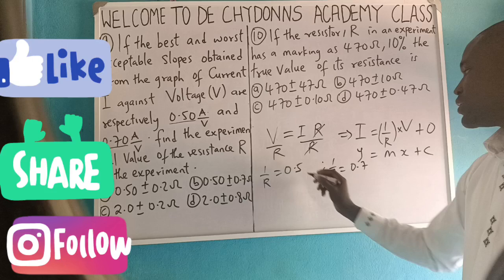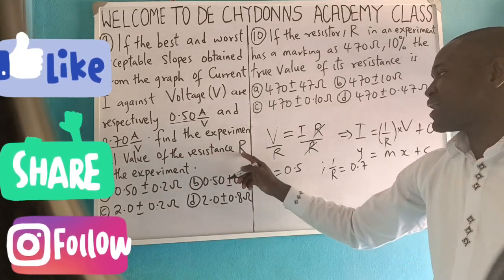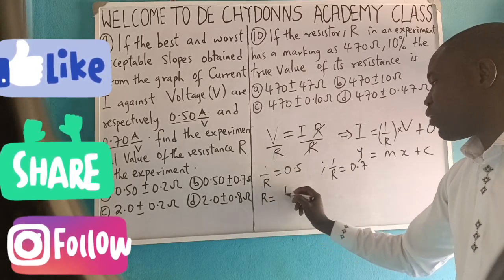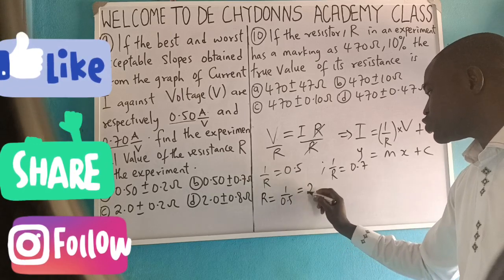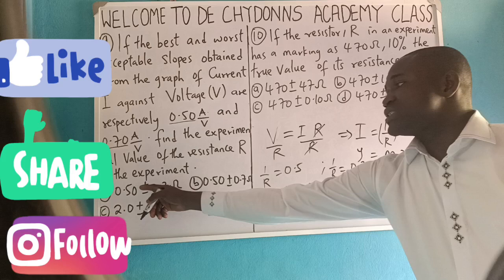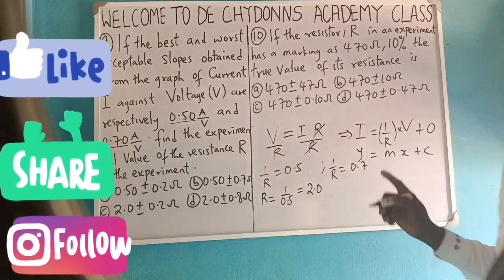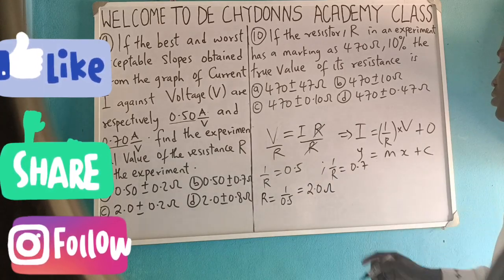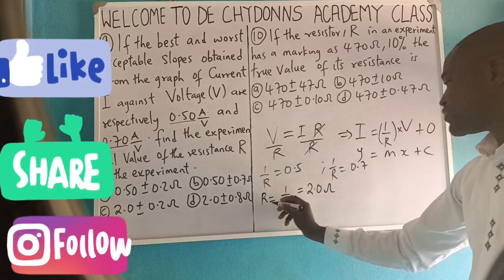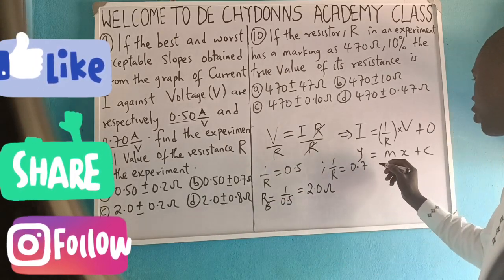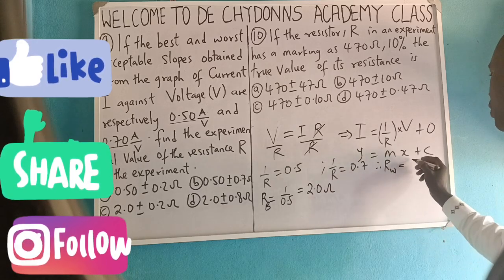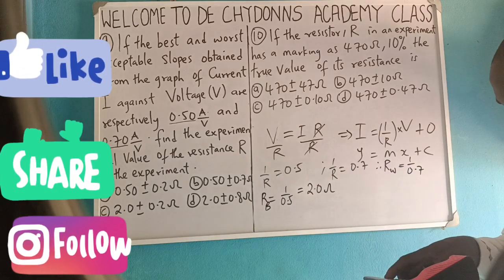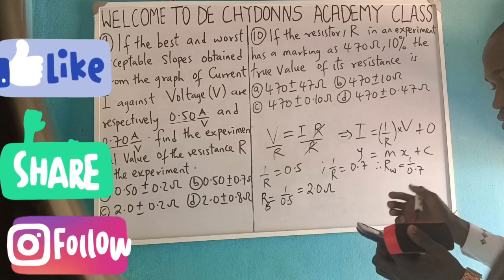Now, to get the experimental resistance of the resistor in the experiment, you will make R inverted: 1 over 0.5, that will give you 2.0. That means I have deleted two options. I am now working for the remaining two options. 2.0 ohms. Then for the worst fit, R equals 1 over 0.7, which gives us 1.43.